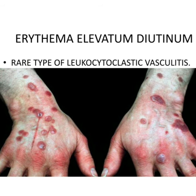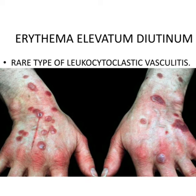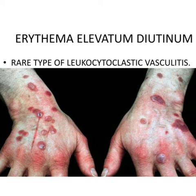This image depicts erythema elevatum diutinum, which is a rare type of leukocytoclastic vasculitis that presents as persistent firm nodules or round or oval plaques on the extensor surfaces of the skin, especially over the joints. The color progresses over time from yellow or pinkish red to red, purple, or brown. It has a tendency to increase in number and size over time, and the increase in size during the day with return to previous size overnight is characteristic.